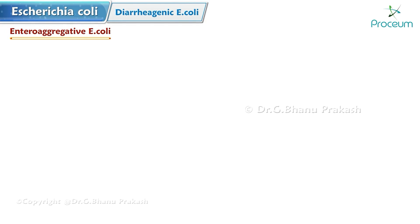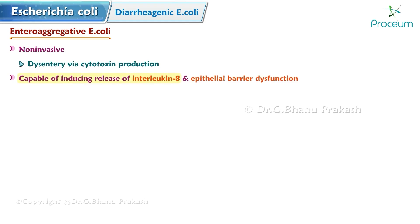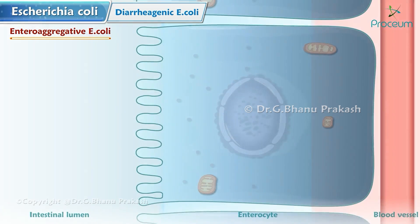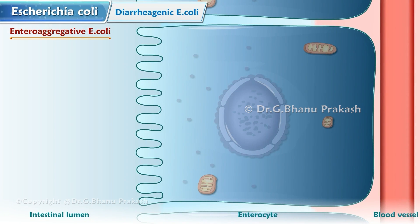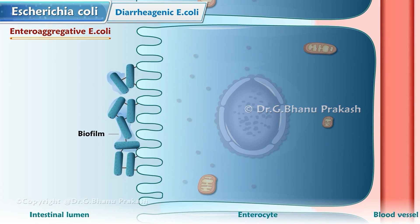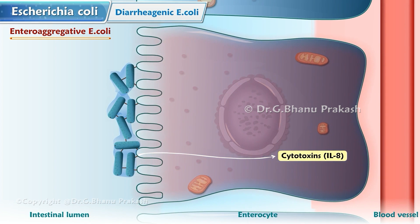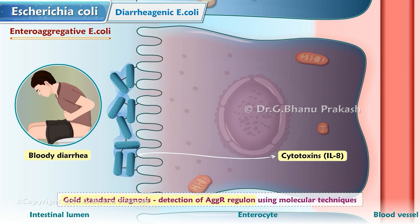Enteroaggregative E. coli (EAEC) is non-invasive but causes dysentery via cytotoxin production. EAEC is capable of inducing the release of interleukin-8 and inducing epithelial barrier dysfunction. It uses fimbriae to adhere to the mucosa layer of enterocytes and then uses enzymes to produce mucus and a biofilm. Once secured, EAEC produces a cytotoxin that damages the intestinal cell, resulting in bloody diarrhea. The gold standard for diagnosis is detection of the aggR regulon using molecular techniques.